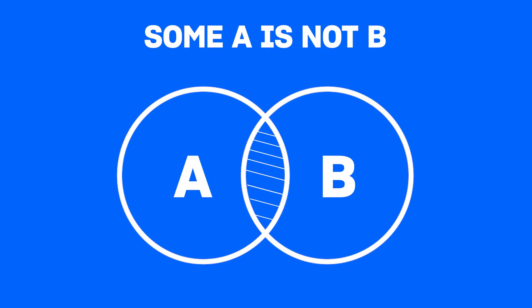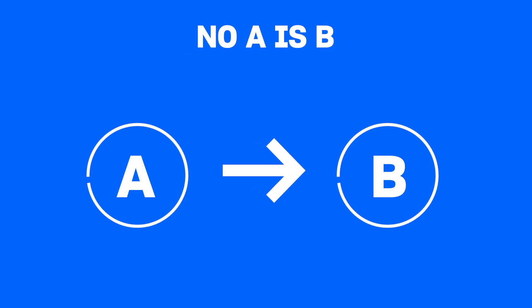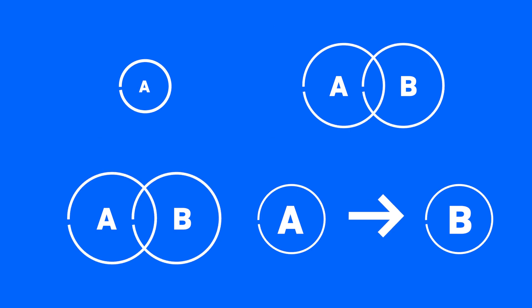Some A is not B, this is how you represent some A is not B. No A is B, this is how you represent no A is B. And out of these four,